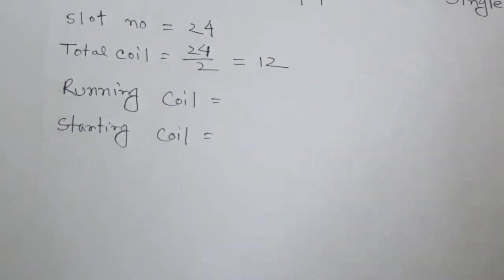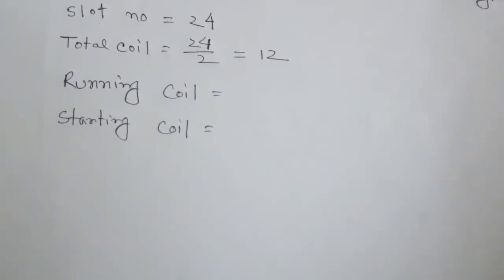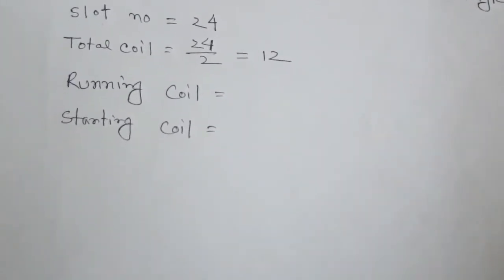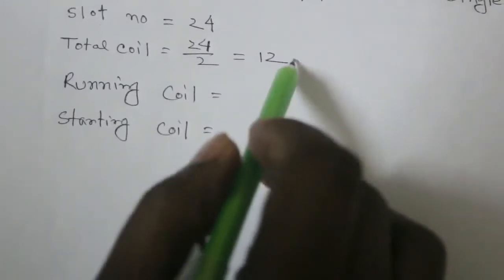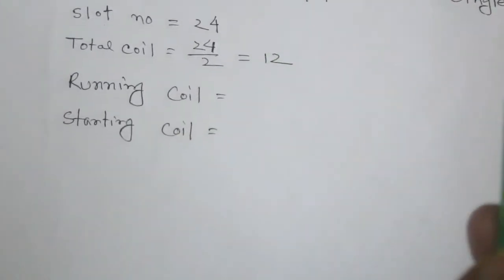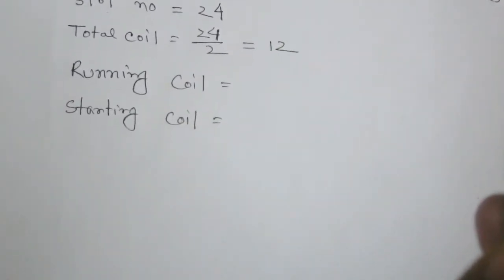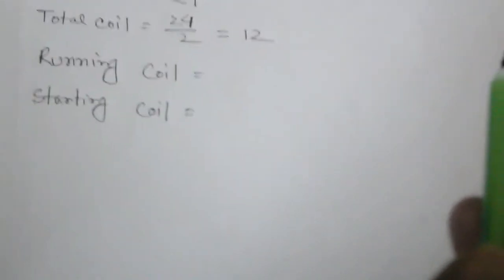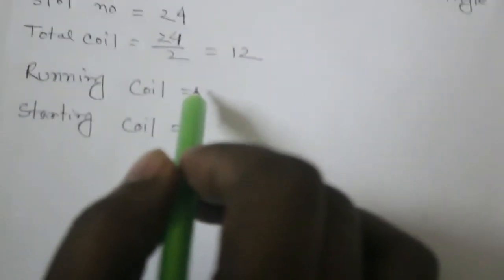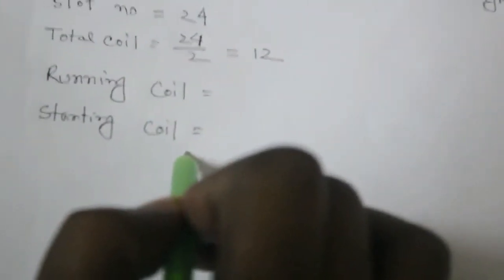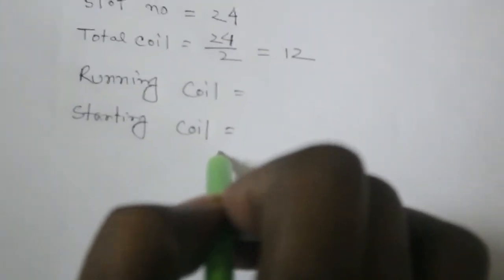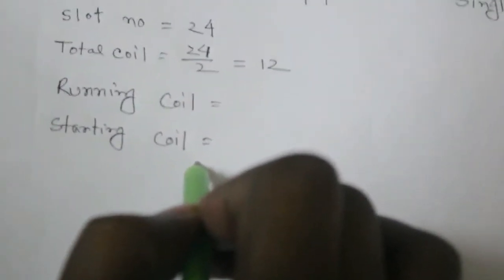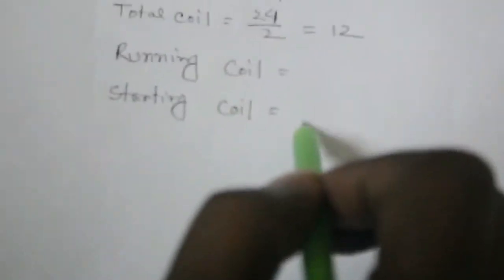The running coil is the main coil, so it needs to be heavier. We divide the total twelve coils into three parts: two parts go to the running coil and one part is the starting coil. This means the running coil is double the starting coil.